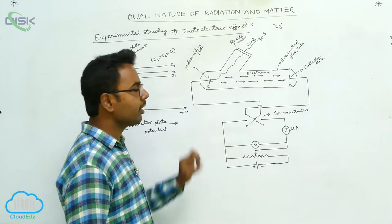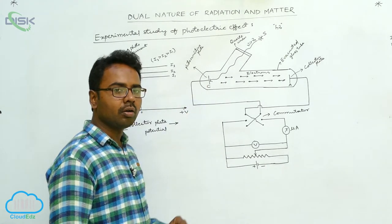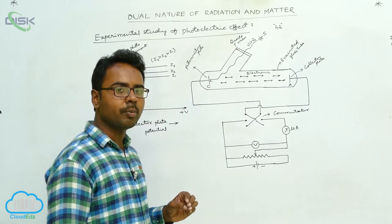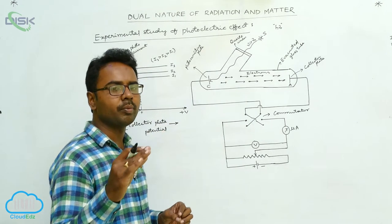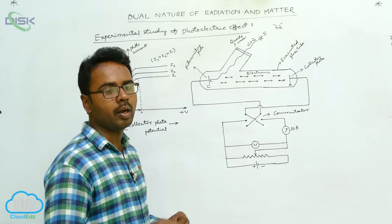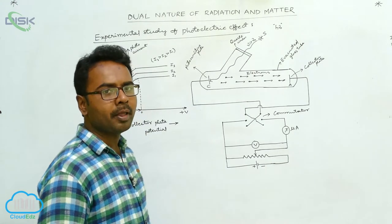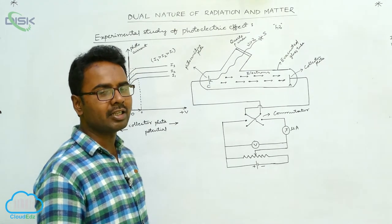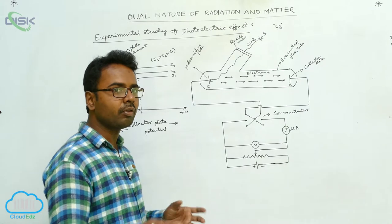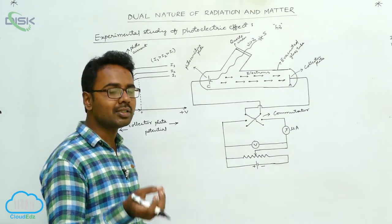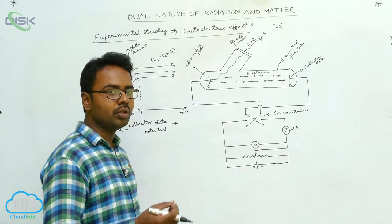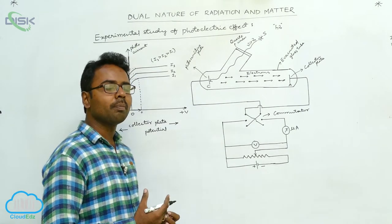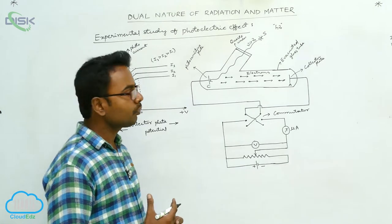The electrons emitted from the photosensitive plate do not all have the same kinetic energy. Few of the electrons are emitted from just the surface of the metal, and few are emitted from inside the metal surface. So, the electrons emitted from the outermost surface have maximum kinetic energy, while electrons emitted from inside the surface have slightly less kinetic energy.